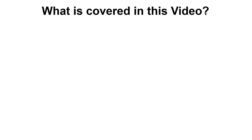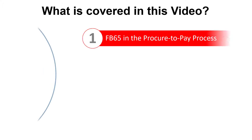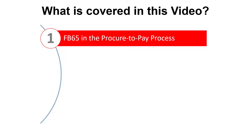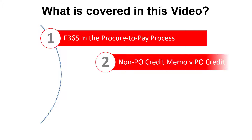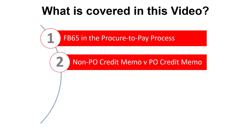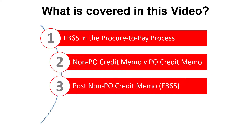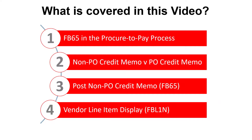Here's a list of our topics. First up, we'll confirm where transaction code FB65 fits in the Procure-to-Pay process, followed by an explanation of the difference between a non-PO credit memo and a credit memo referencing a purchase order. Then it's on to posting a non-PO credit memo using Transaction FB65 in SAP. Once the credit memo is posted, we'll analyze the vendor line item display, Transaction FBL1N.